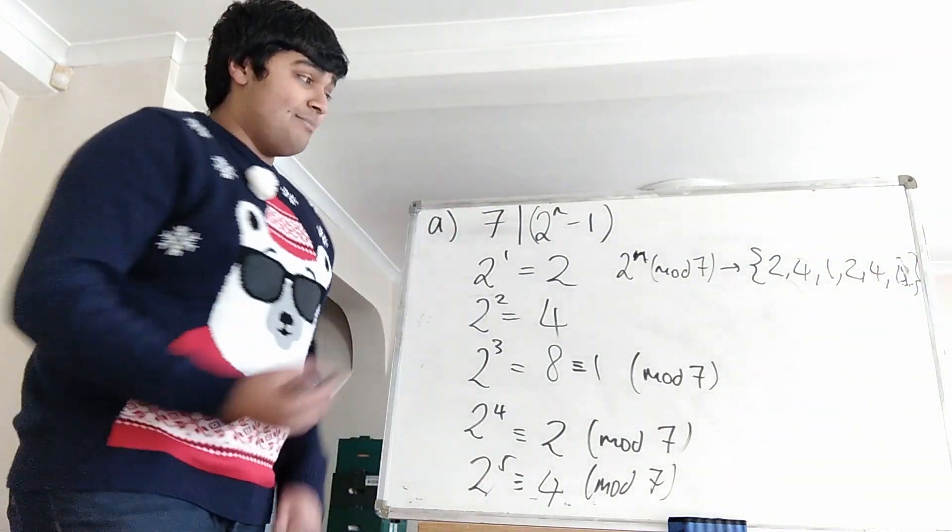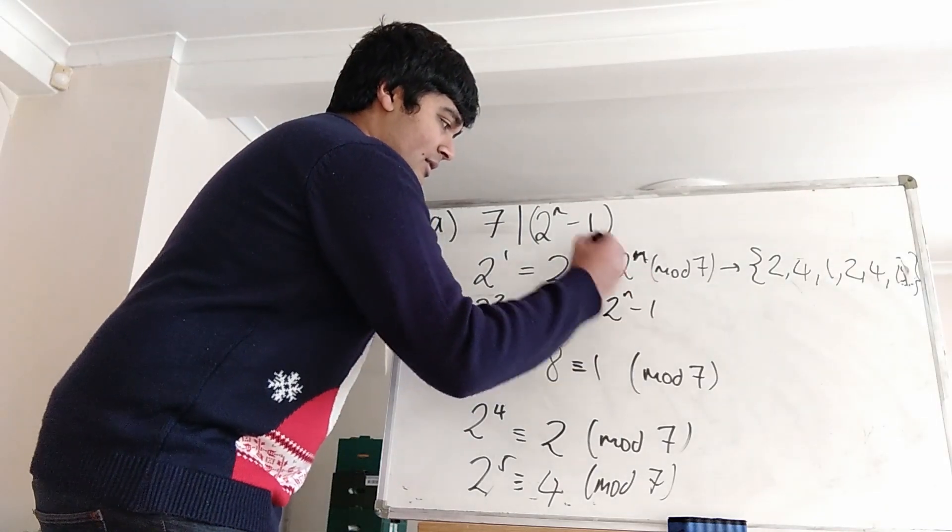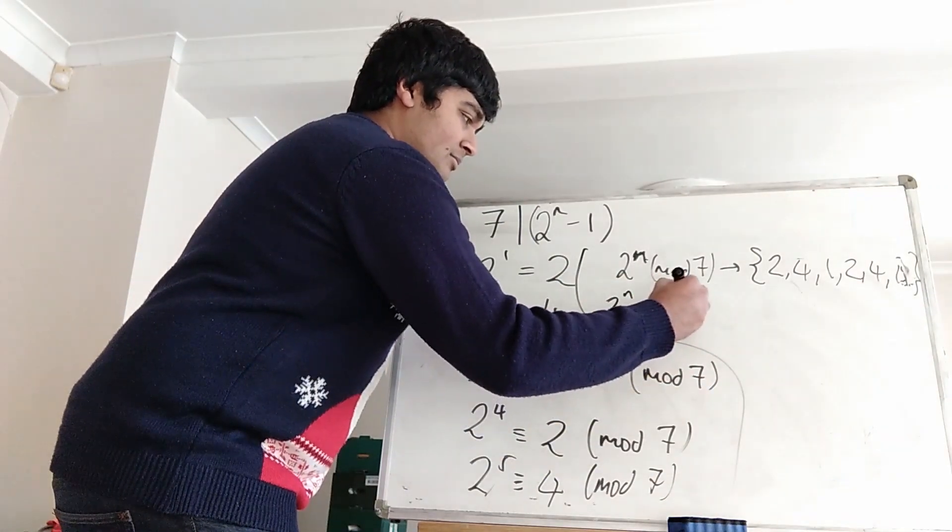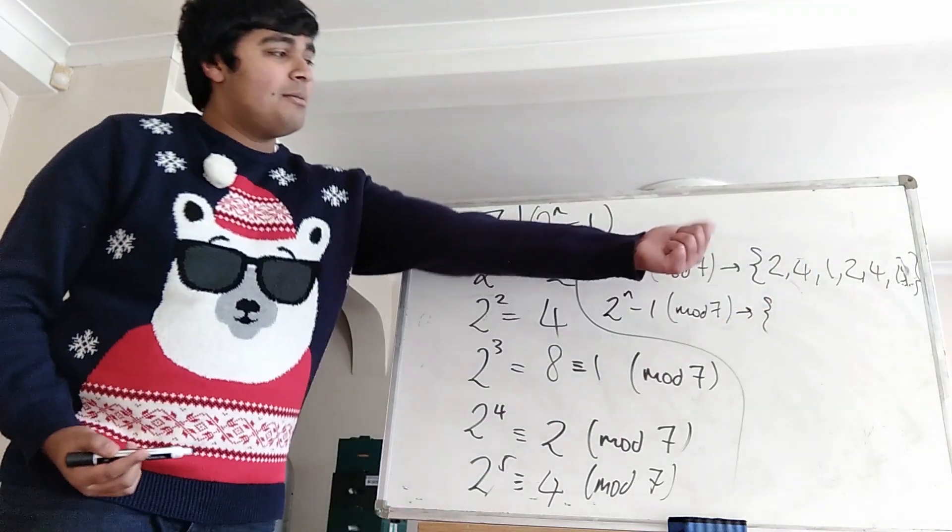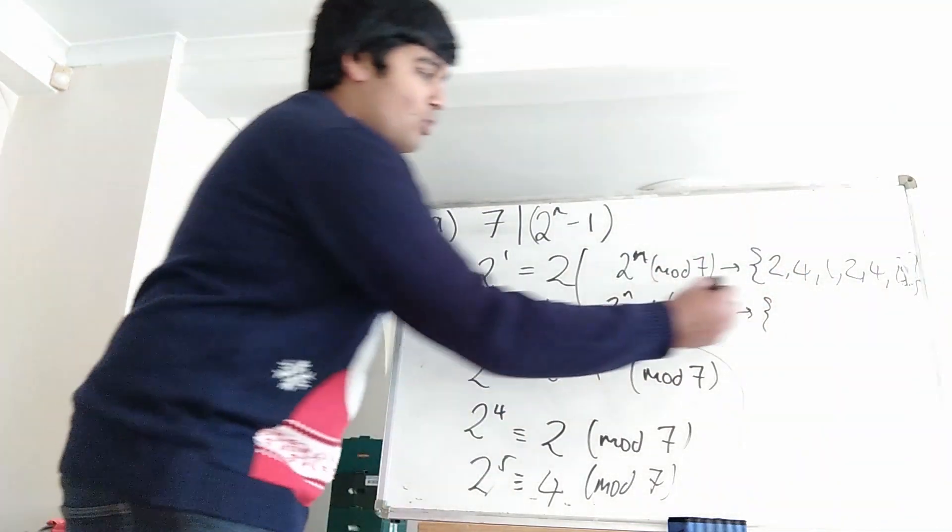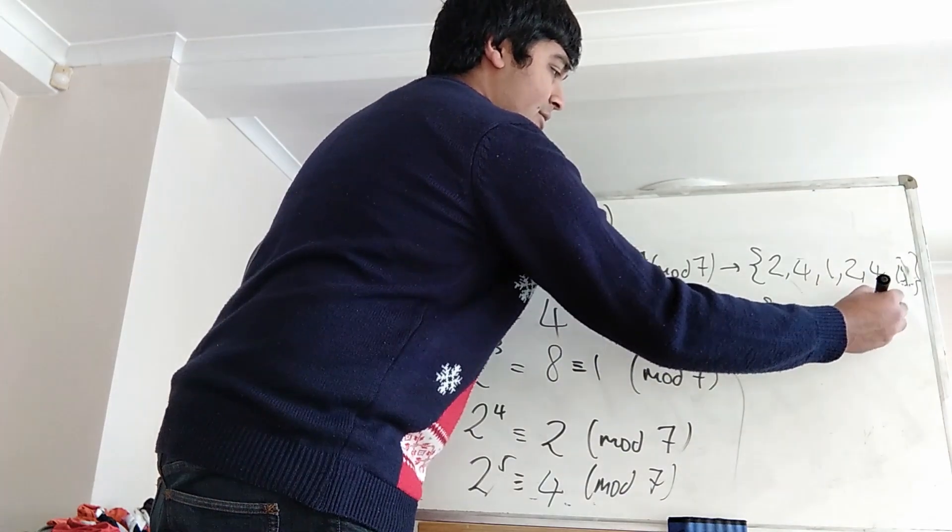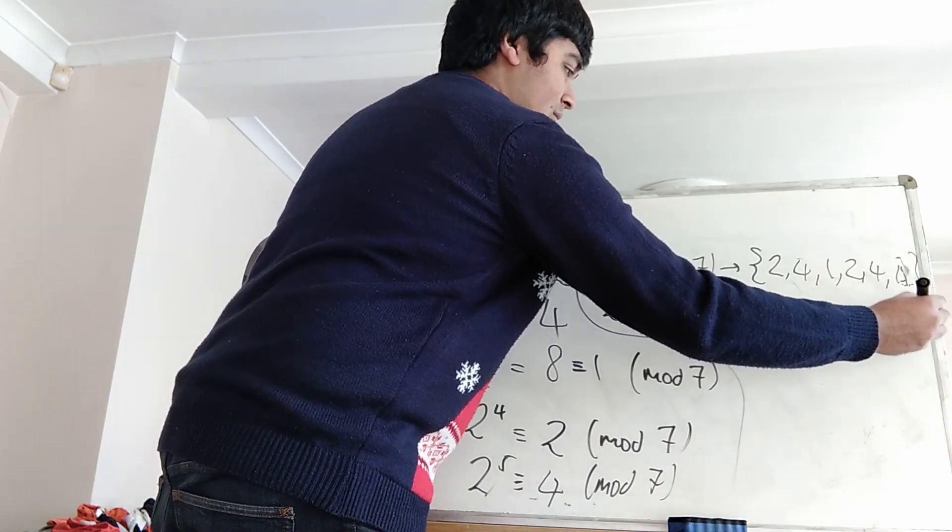Okay, so of course that means 2 to the n minus 1, if you look at that mod 7, that's going to give us this sequence here. The exact same thing as that but I'm subtracting 1 from each element. So I get 1, 3, 0, 1, 3, 0 and so on.